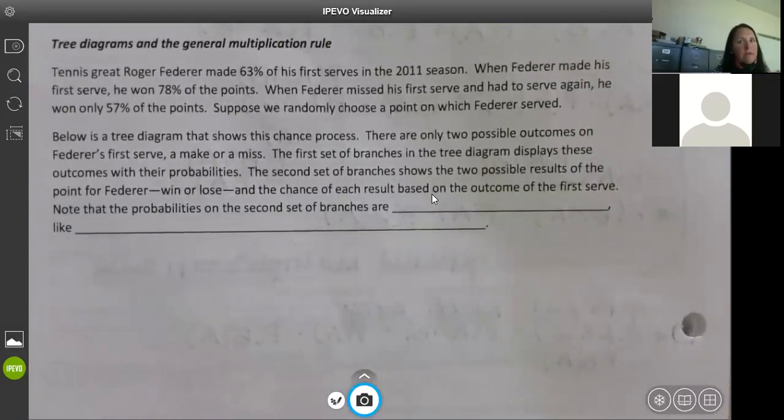Tennis great Roger Federer made 63% of his first serves in the 2011 season. When he made his first serve, he won 78% of the points. When Federer missed his first serve and had to serve again, he won only 57% of the points. Suppose we randomly choose a point on which Federer served. Below is a tree diagram that shows this chance process. There are only two possible outcomes on his first serve, a make or a miss. The first set of branches in the tree diagram displays these outcomes with their probabilities. The second set of branches shows the two possible results of the point for Federer, win or lose, and the chance of each result based on the outcome of the first serve. Note that the probabilities on the second set of branches are conditional probabilities.